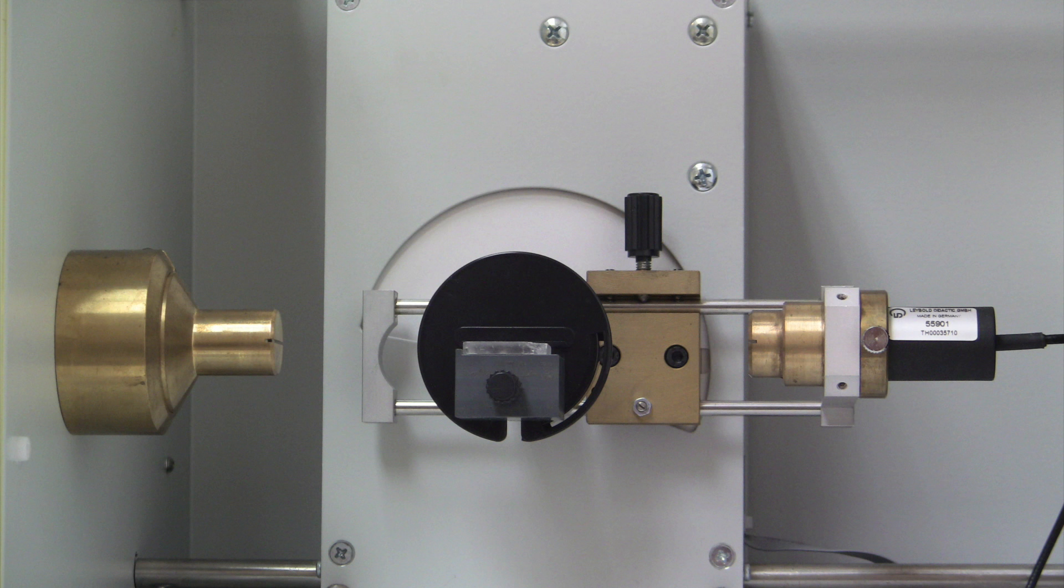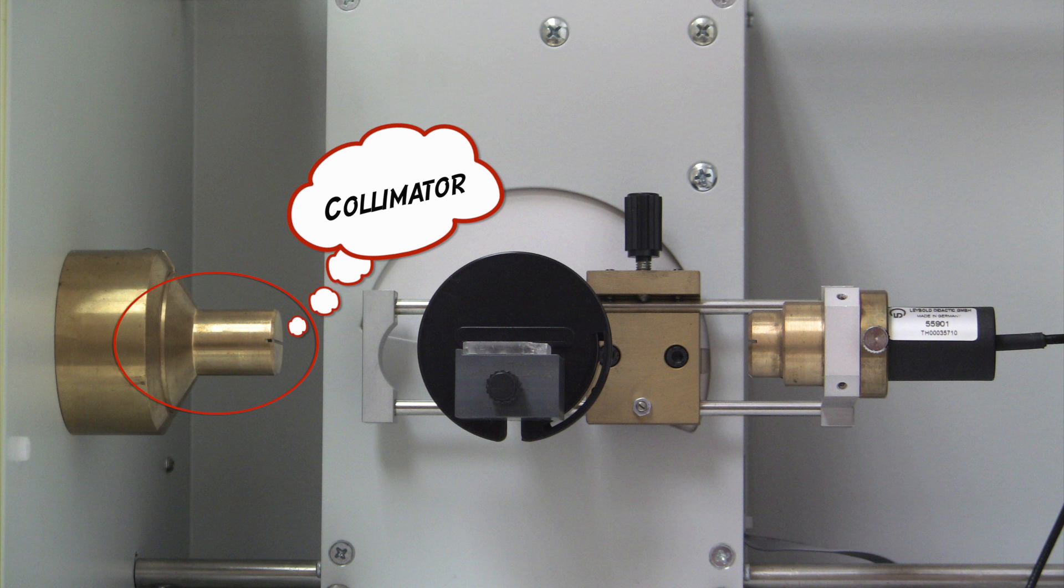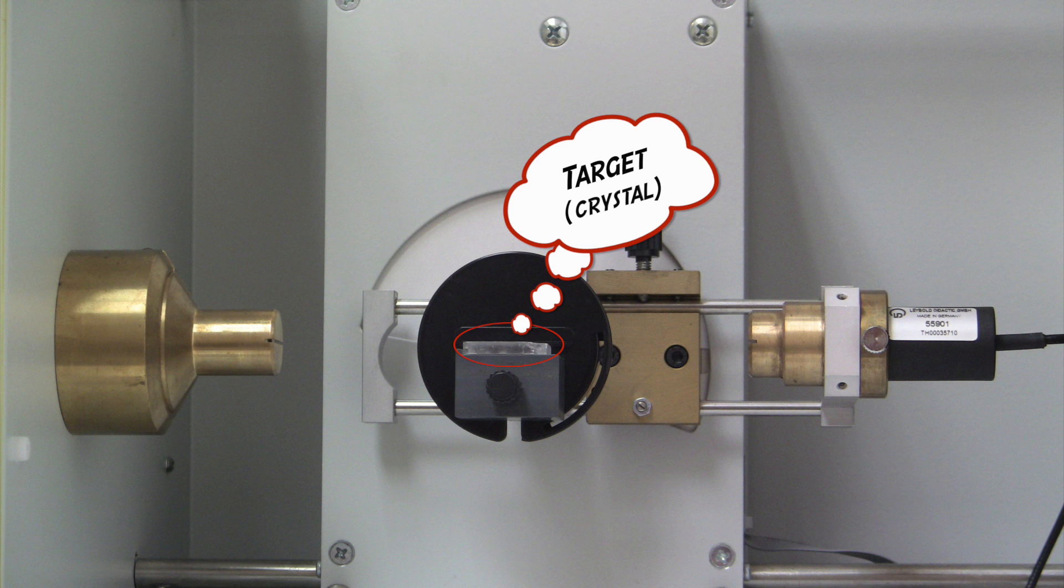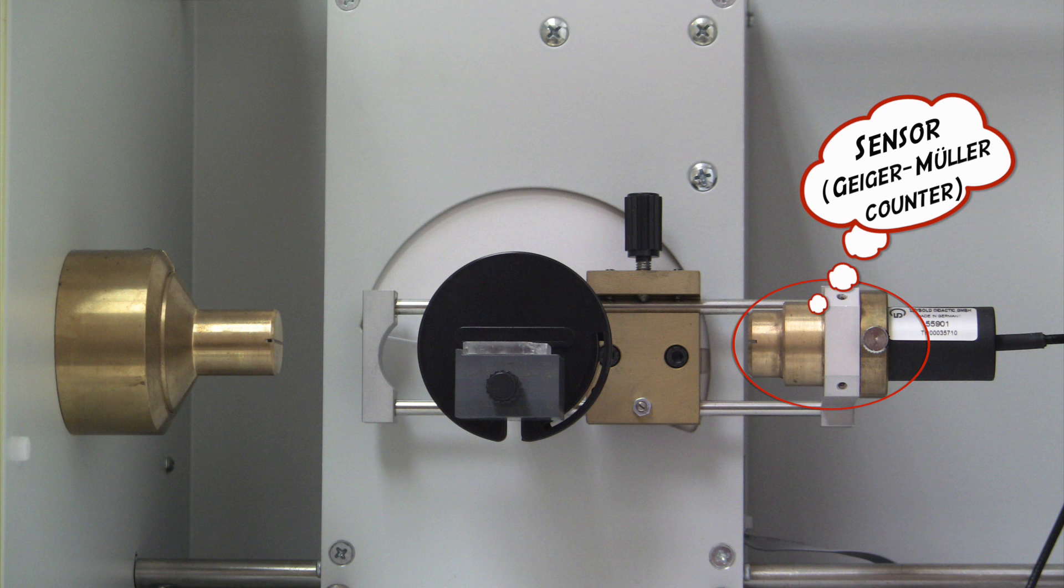The X-ray apparatus consists of three main subcomponents. The first is the X-ray source, including the X-ray tube and the aperture. The second is the target. A sodium chloride crystal is used as the target for most part of the lab. The third part is the sensor, a Geiger-Müller counter, which records rate of the reflected X-ray from the target.